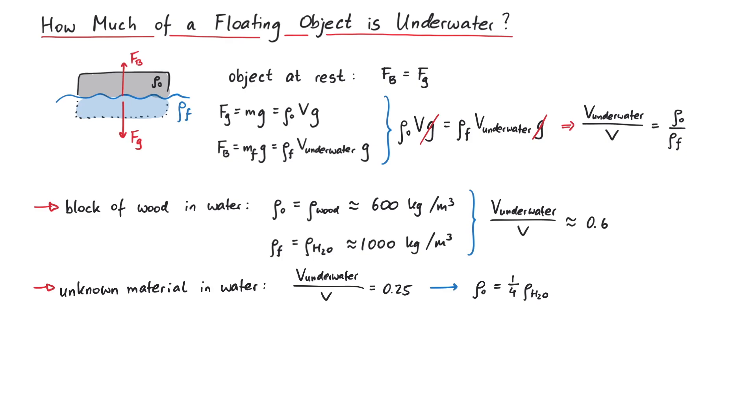As a last example, consider an iceberg in the ocean. Solid ice has a density of around 917 kg per cubic meter, and seawater has a density of around 1030 kg per cubic meter.